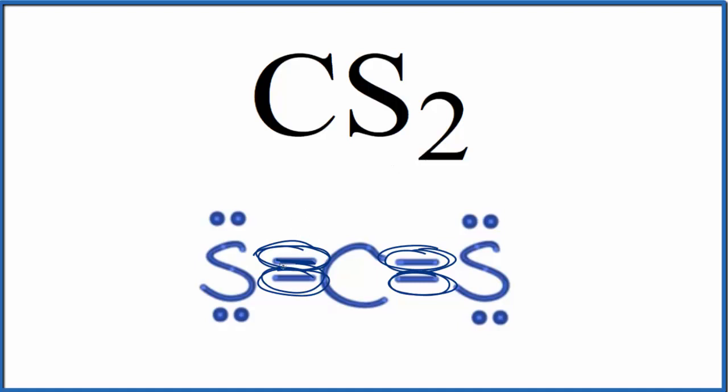We could look at lone pairs on the sulfur here, for example. This is a lone pair and a lone pair here. So this sulfur here has two lone pairs, and then this one over here, that would be the same. But in general, we're really interested in that central atom because it influences the molecular geometry.